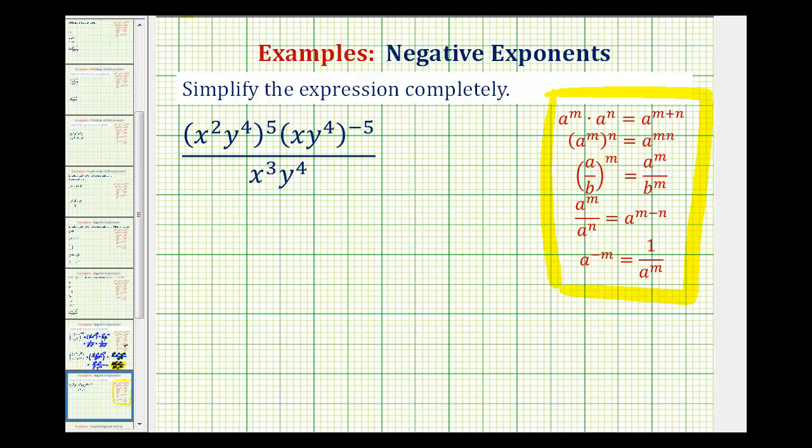Let's start by simplifying the numerator. Here we have x to the second y to the fourth raised to the fifth. Here we have x y to the fourth raised to the negative fifth. It might be helpful to write the exponent of one on this x.